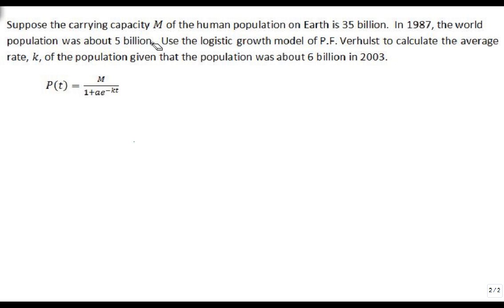And so here, suppose that the carrying capacity M, that's the maximum, of the human population on Earth is 35 billion. In 1987, so this is a key year, the world population was about 5 billion. We'll use the logistic growth model of P.F. Verhulz to calculate the average rate K of the population, given that there was 6 billion people in 2003.